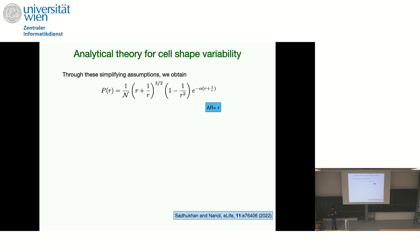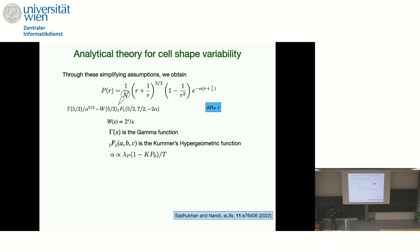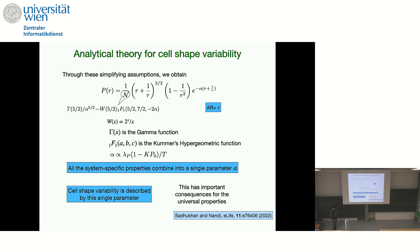After going through all of the algebra and using these assumptions, we can write down the probability distribution function of r, the aspect ratio, in a particular form where N is a normalization coefficient. The main point is that all the system-specific parameters — λ_P, P₀, T, etc. — combine into a single parameter α that describes the probability distribution function of the cell-shape variability in the monolayer. This has the important consequence that all system-specific details are captured in a single parameter, which leads to the universal properties I'll show next.